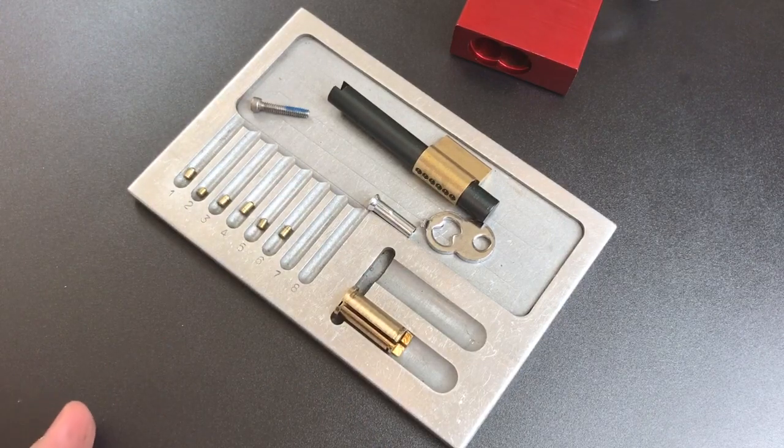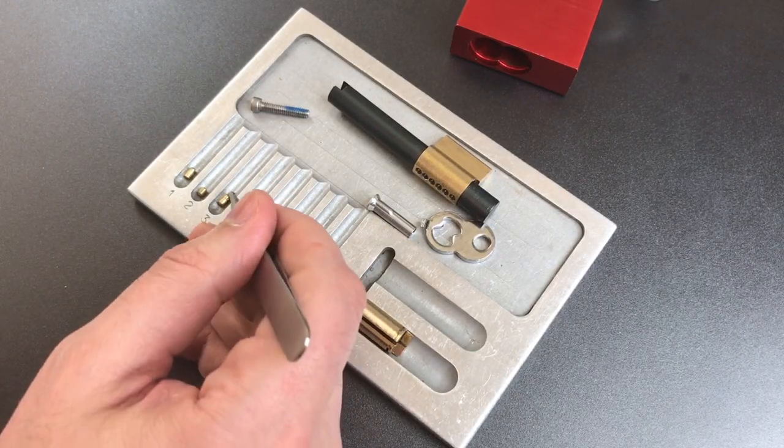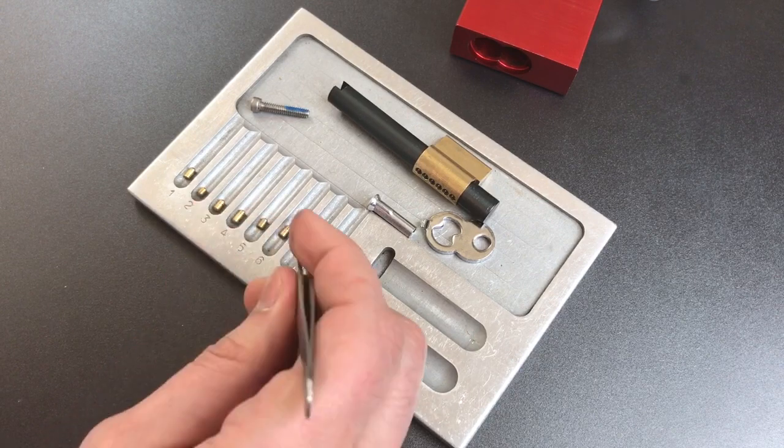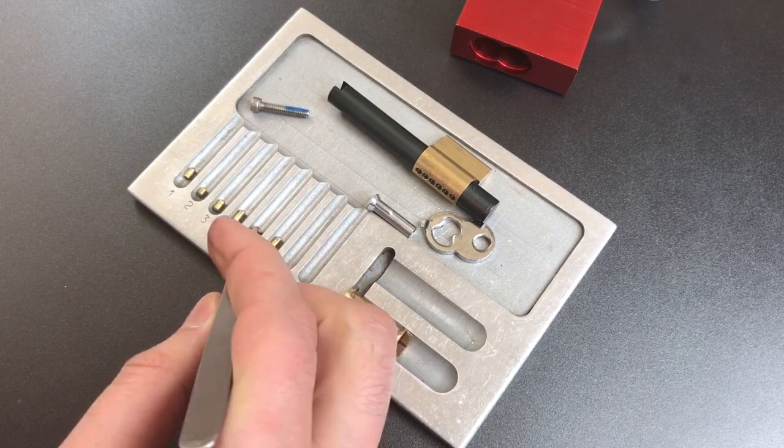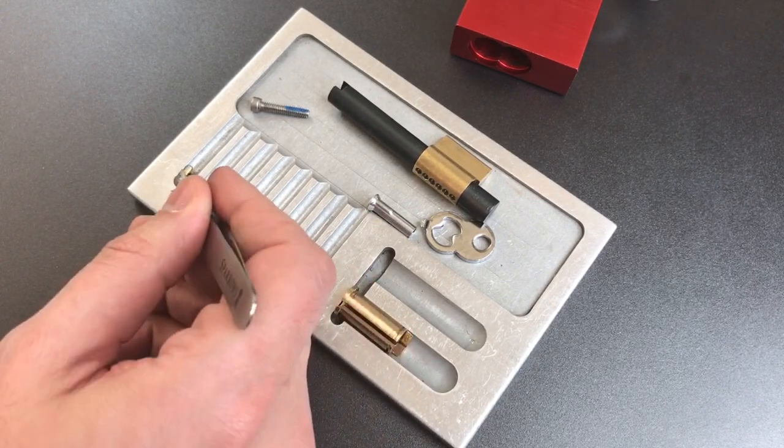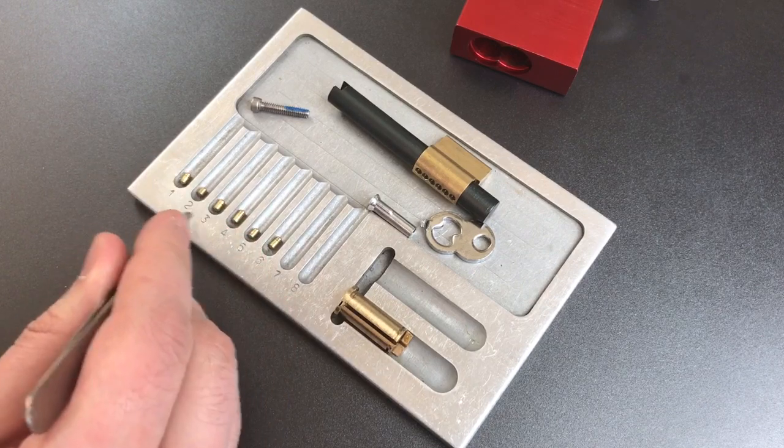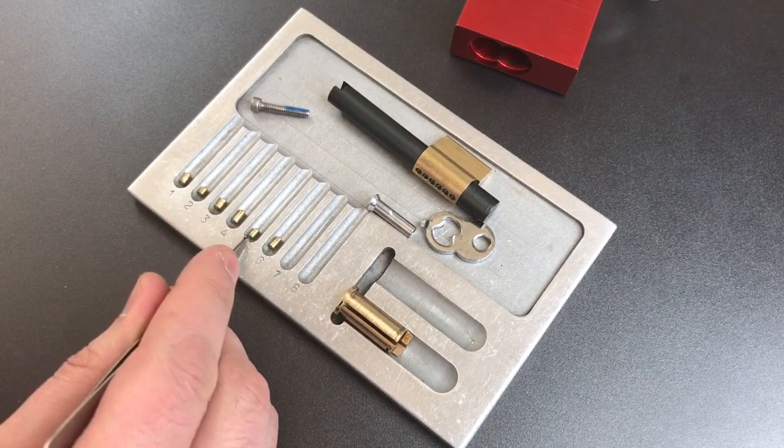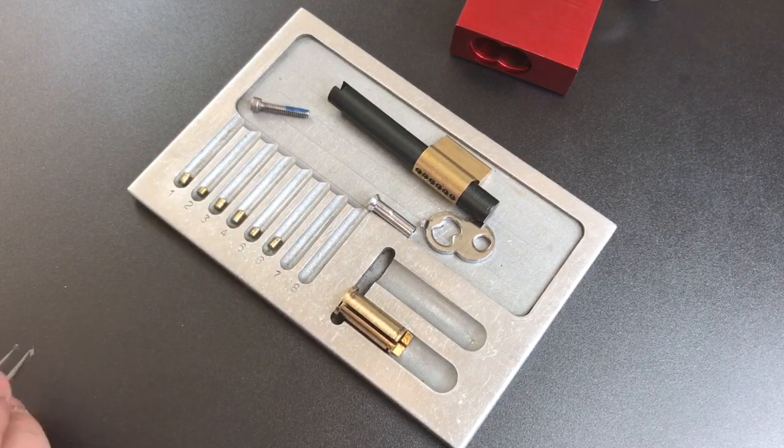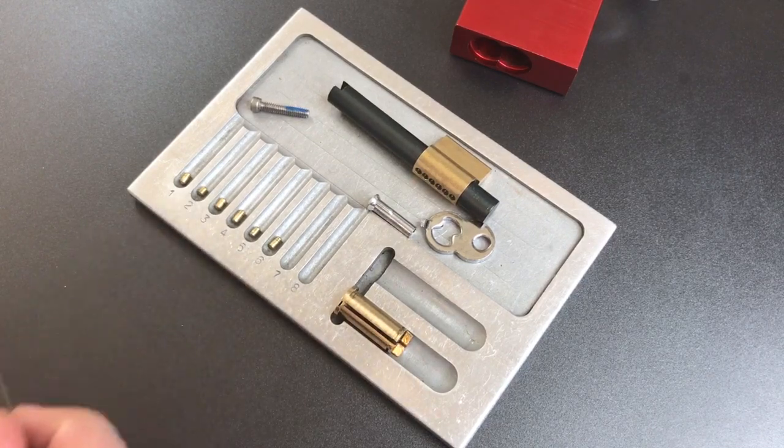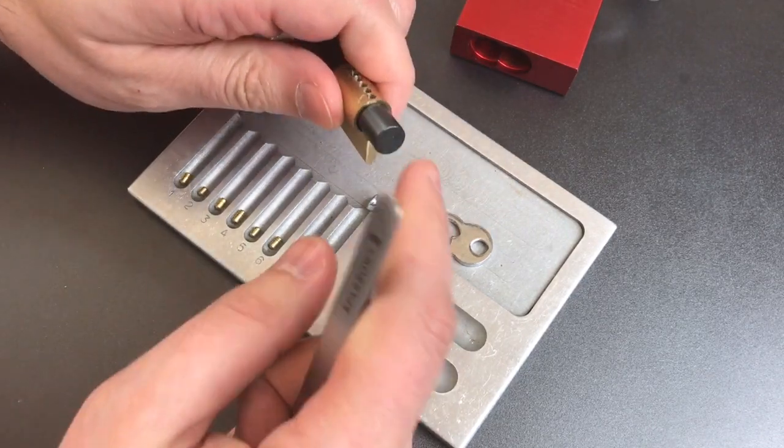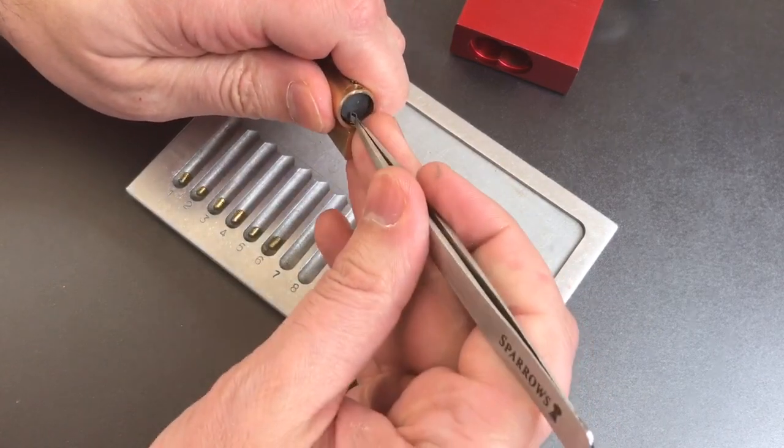And six is serrated. Now, it's interesting. Number three has only one serration on it, while the other serrated keypins have two serrations. I wonder if that's a manufacturing error. And then two of the shorter ones, the keypins in slots two and five, have no serrations. It's probably because those keypins are too short for any serrations to come into play.